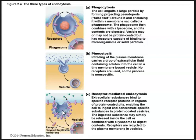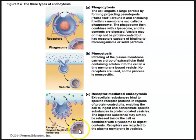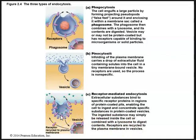The ingested substance can be simply released inside the cell or combined with a lysosome to digest whatever contents are within that vesicle. Once this has occurred, receptors can be recycled and go back to the plasma membrane.